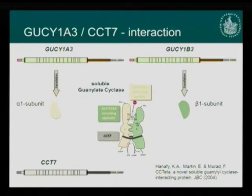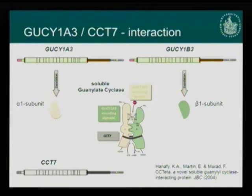How does this GUCY1A3 and CCT7 interaction work? GUCY1A3 and GUCY1B3 code for the alpha and beta subunits of soluble guanylate cyclase. This complex is not stable without the chaperone CCT7, so GUCY1A3 interacts with CCT7 to maintain a stable complex of soluble guanylate cyclase, which converts GTP to cGMP.